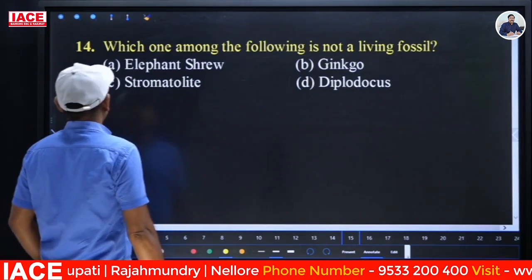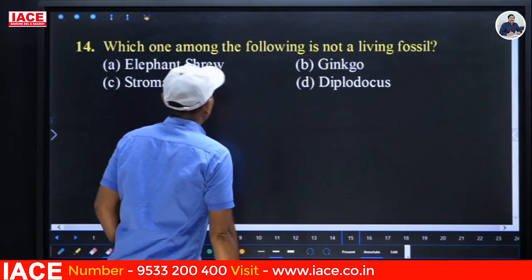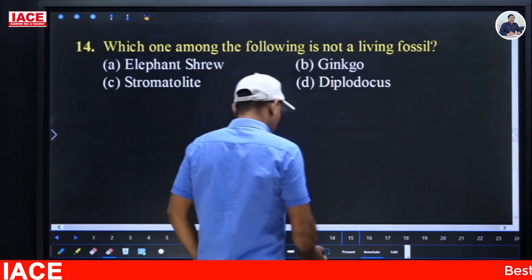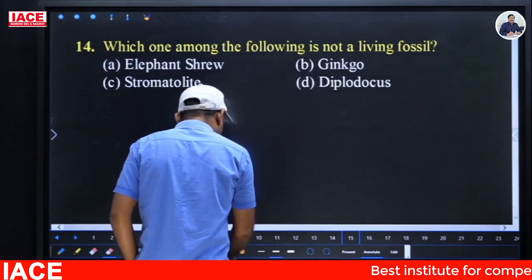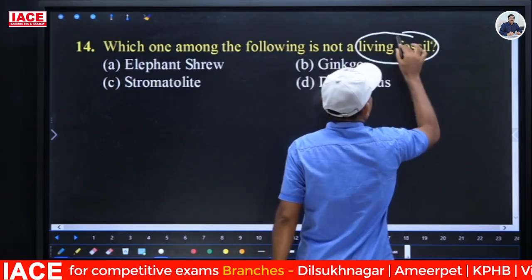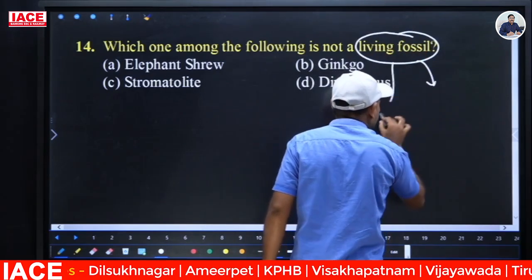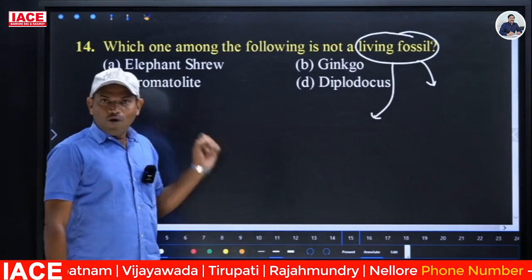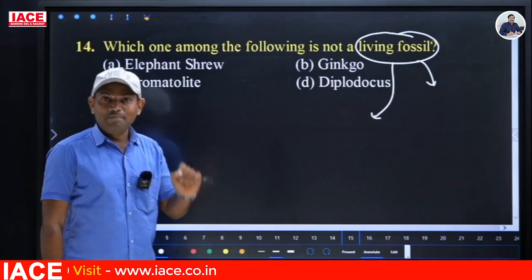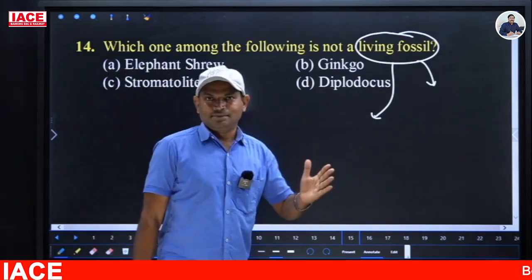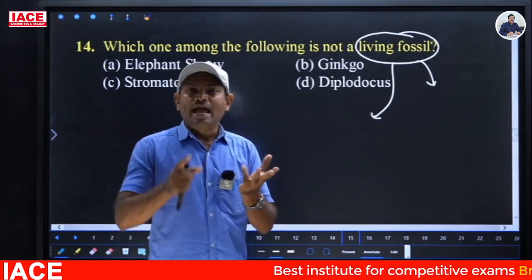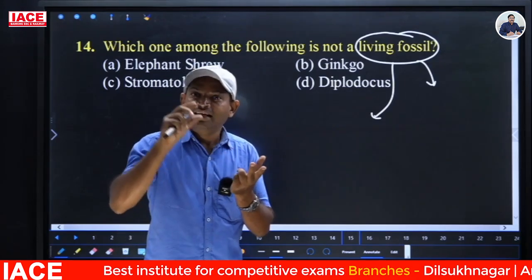Next: Which of the following is NOT a living fossil? Options: (A) Elephant shrew, (B) Ginkgo, (C) Stromatolite, (D) Diplodocus. A fossil is a remnant preserved by nature — memories of organisms that lived in the past in the form of footprints, hair, nails, or bones. A living fossil refers to organisms whose numbers have declined so drastically they are about to become extinct.